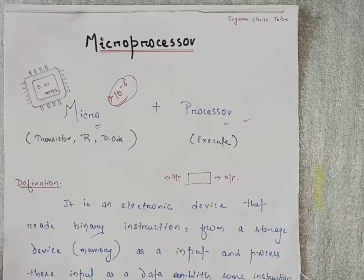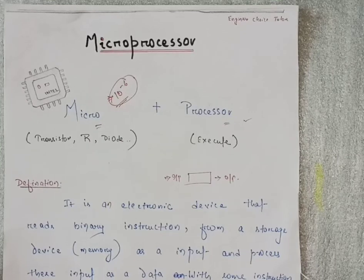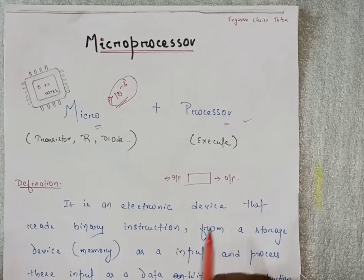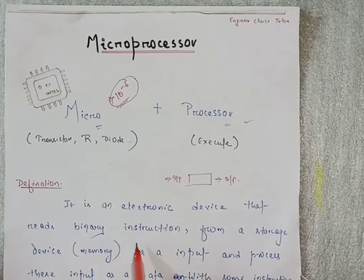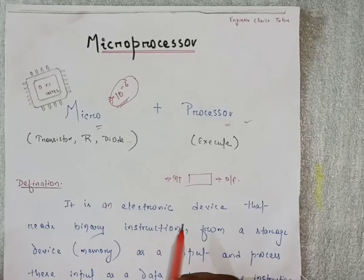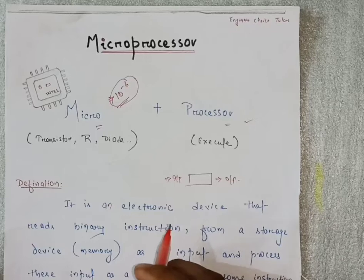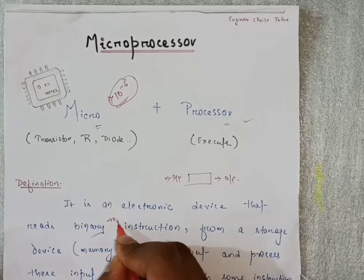Coming towards the definition of microprocessor. If anyone asks what do you mean by microprocessor or define microprocessor, it is an electronic device that reads binary instructions. As we know, it is a simple electronic device and computer only knows binary instructions - it understands zero and one only.